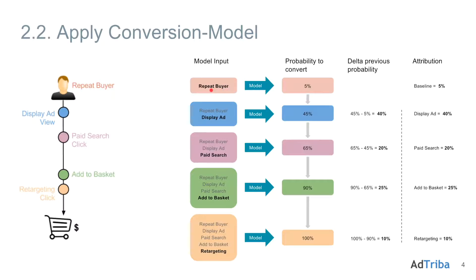For example, the first information we have at the start of this customer's journey is that it's a repeat buyer. We enter that information into our model and the conversion probability output is 5%, so our baseline is 5%. Even without any information about upcoming marketing contacts, we know the conversion probability based solely on being a repeat buyer is 5%. The second contact is a display banner ad view. We enter that information plus the repeat buyer information into the model and the new conversion probability is 45% — an uplift of 40 percentage points from the previous 5% — and these 40% will be attributed to the display ad channel.